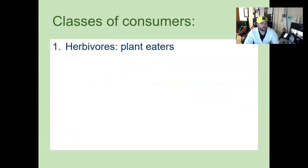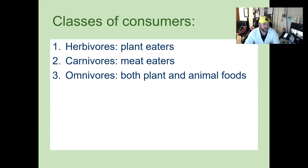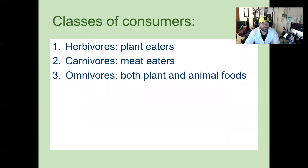So classes of consumers: herbivores, which are plant eaters; carnivores, which are meat eaters; and omnivores, which eat both. We would consider ourselves to be omnivores for the most part, unless you really don't like vegetables like me.